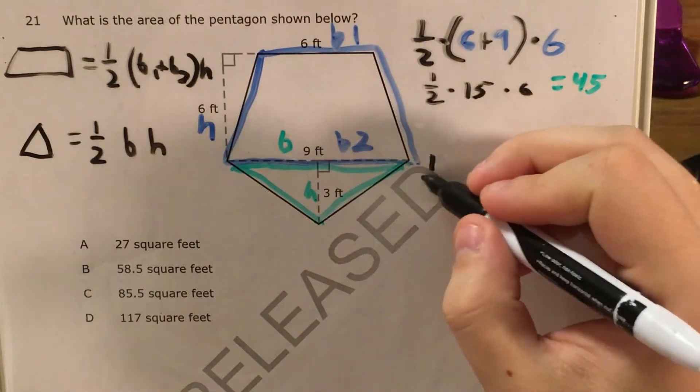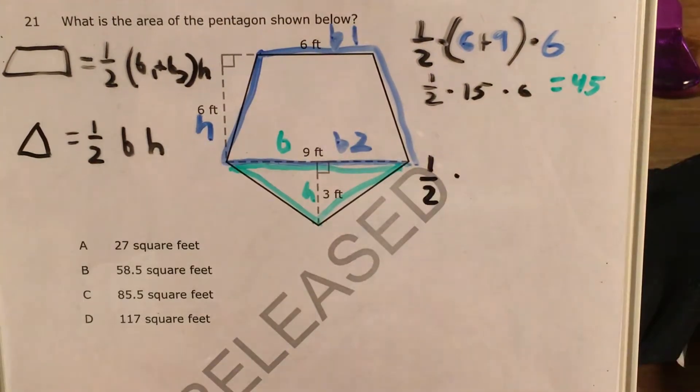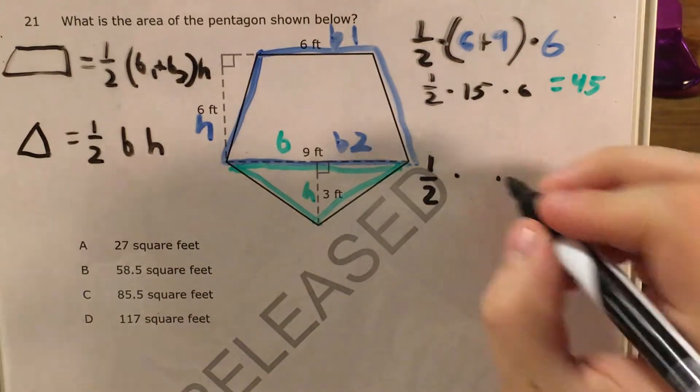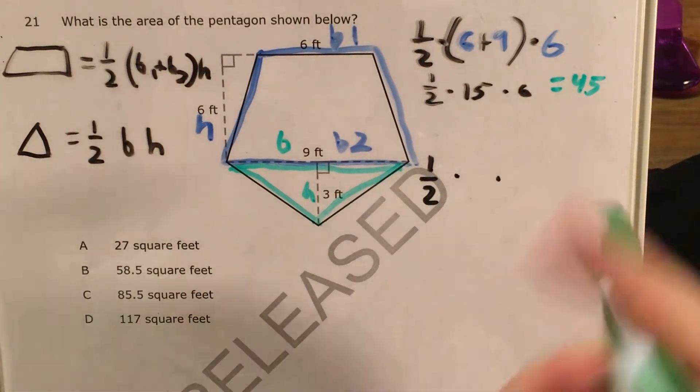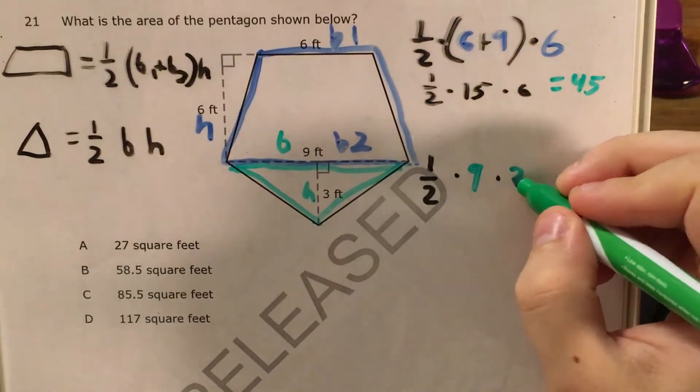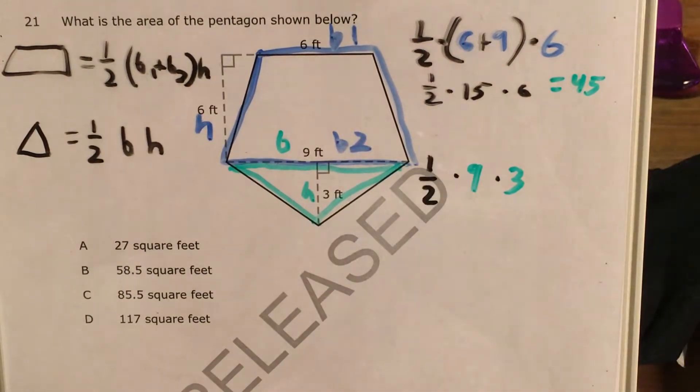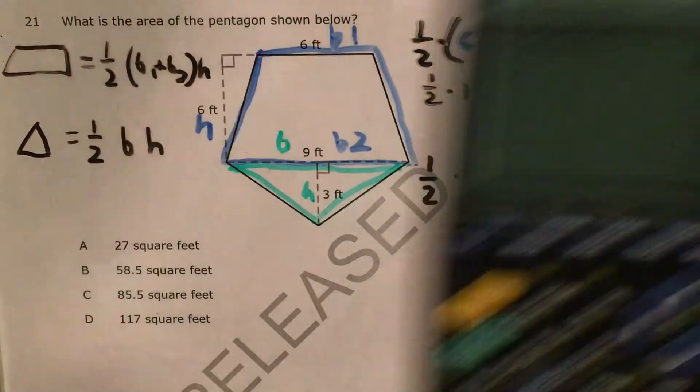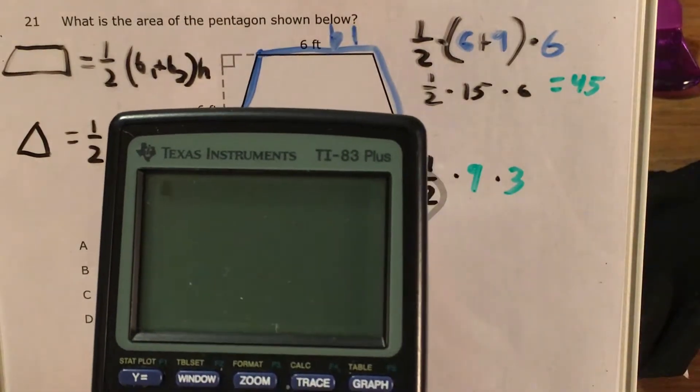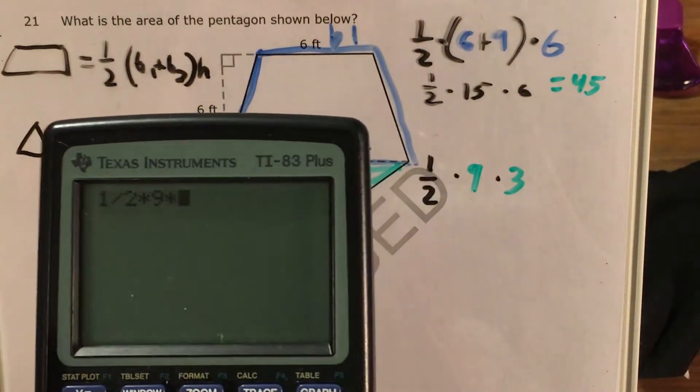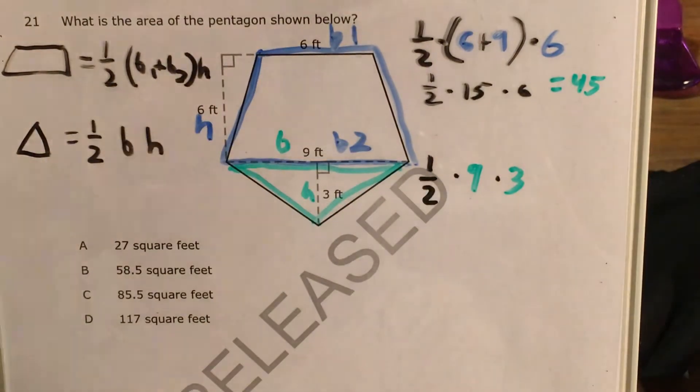So to plug that into the formula, this is one-half times, and so my base is nine, my height is three. So this is one-half times nine times three. I can go ahead and plug this in my calculator. One-half times nine times three gets me thirteen point five.